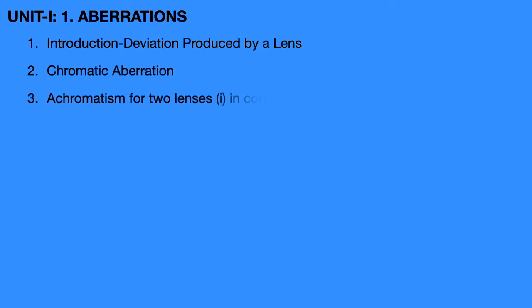Generally, aberrations are called defects of images due to lenses. The first unit contains 8 topics. First, Introduction, in which the topic is deviation produced by a lens. Second, Chromatic Aberration. Third, Achromatism for two lenses in contact and separated by distance.